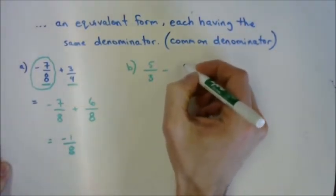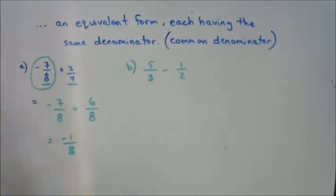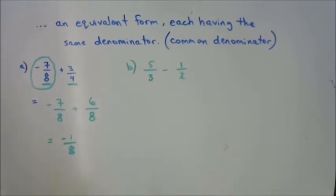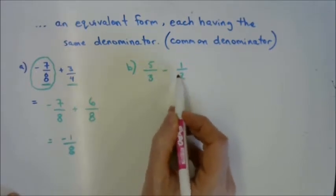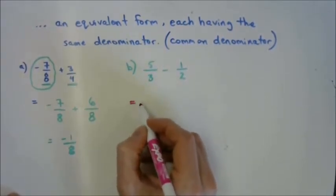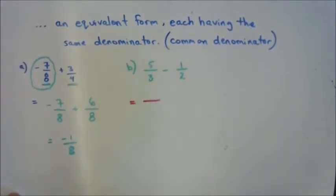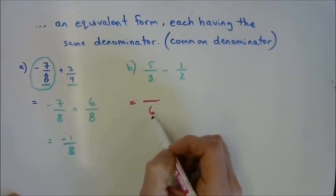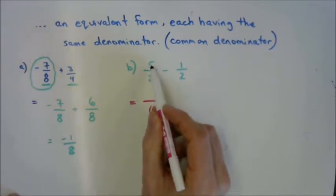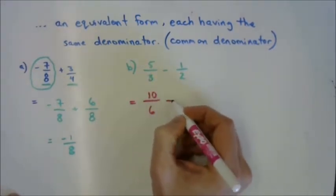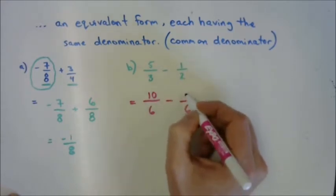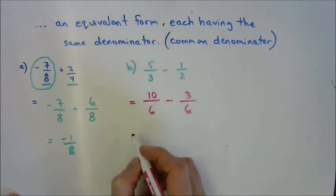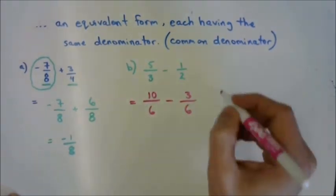Problem B: five over three minus one over two. I can't add or subtract thirds and halves, so I need to convert them to a common denominator. What's the common denominator between three and two? Six is easier than twelve. To get three into six I multiply by two, so five times two is ten-sixths. And one-half converts into three-sixths. That's done — we don't need to finish it out.